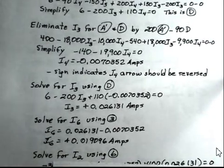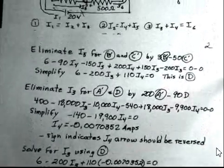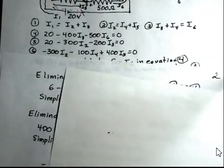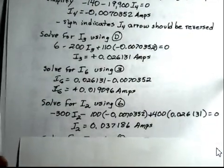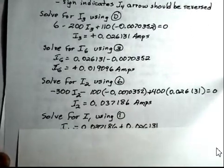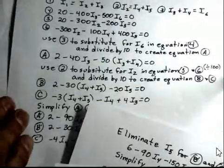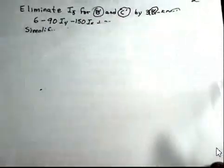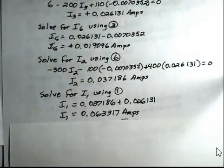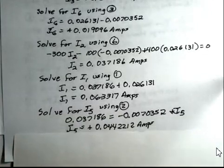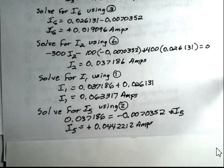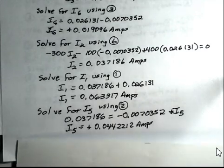Now we can solve for I2 using equation 6. Equation 6, just to remind you, is right here. It has I2, I4, and I3, and we have values for I4 and I3. So if we put those in, we find I2 is 0.037186 amps. Now we can solve for I1 using equation 1, and we come back here. I1 is I2 plus I3. We know the values for I2 and I3, so we put those in. We find I1 is 0.063317 amps. Now we can use equation 2, and I'm going to go back to it this time. We can solve for I5. We find that I5 is plus 0.0442212 amps. So only I4 had the problem of the negative sign. All the others I chose correctly for the direction of the arrows, and we have the six currents.